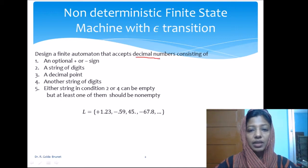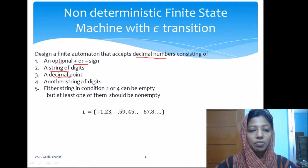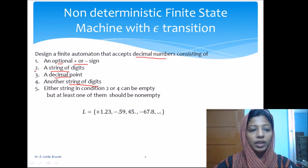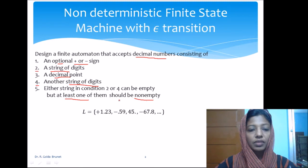We want to design a finite state machine that accepts decimal numbers consisting of: an optional plus or minus sign, followed by a string of digits, followed by a mandatory decimal point, followed by another string of digits. Either the first or second string of digits can be empty, but both cannot be empty at the same time — at least one must be non-empty.